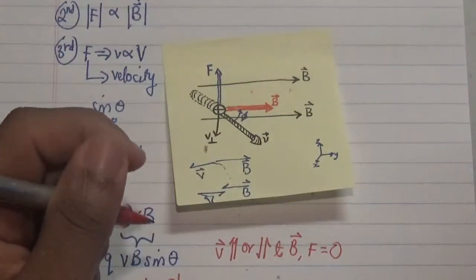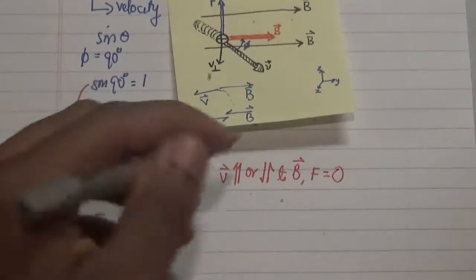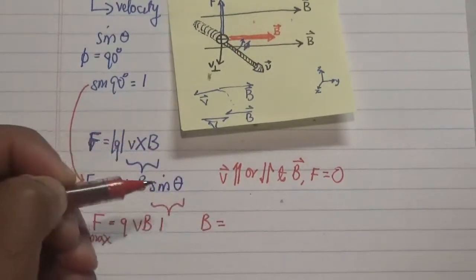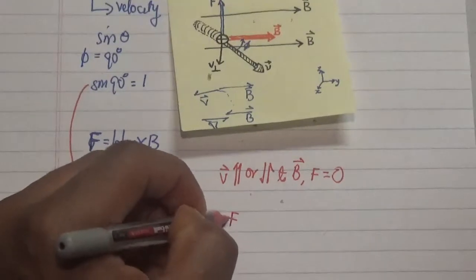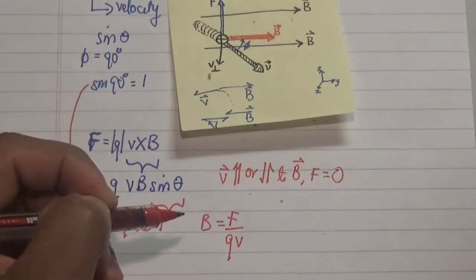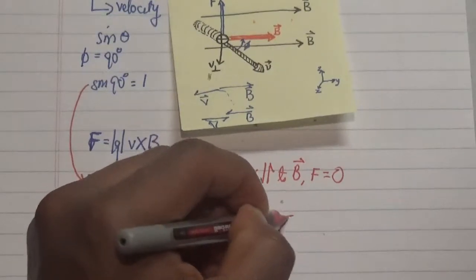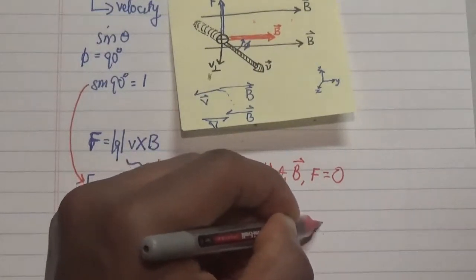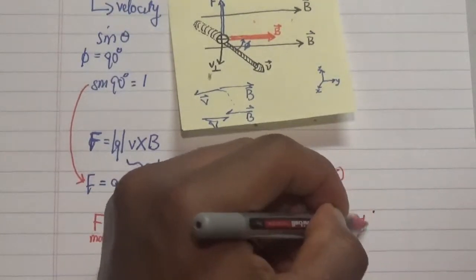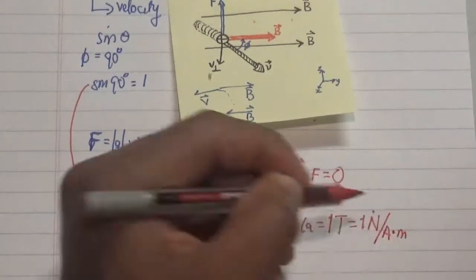B represents the magnetic field, and the magnetic field B equals the force generated divided by the quantity of charge multiplied by the velocity of the charged object. This gives us the unit Tesla: 1 T = 1 N / (A·m).